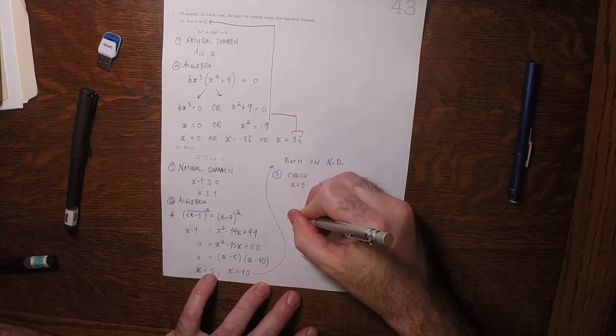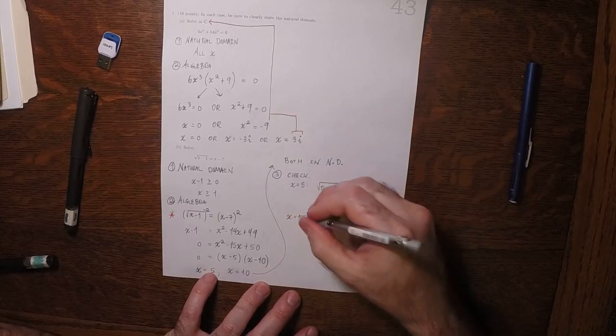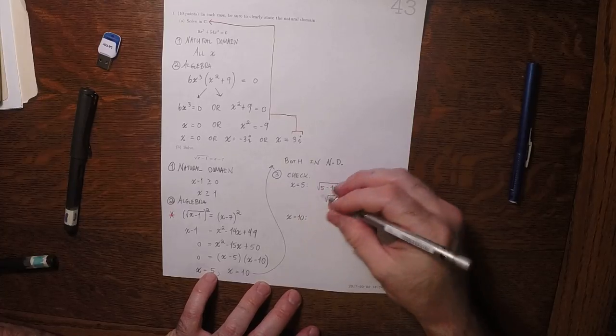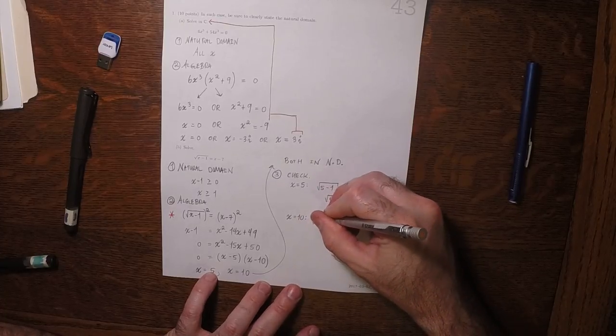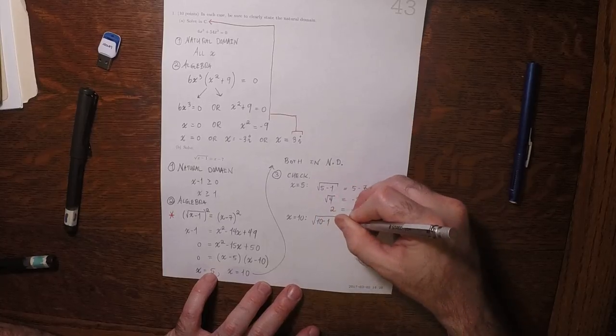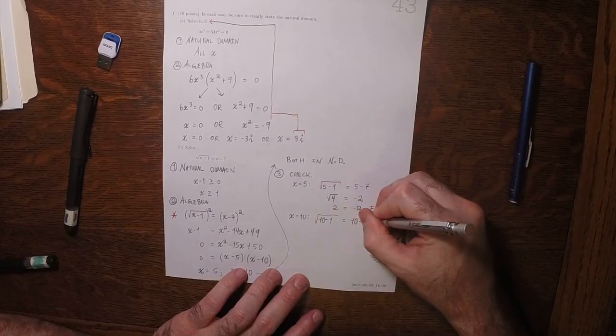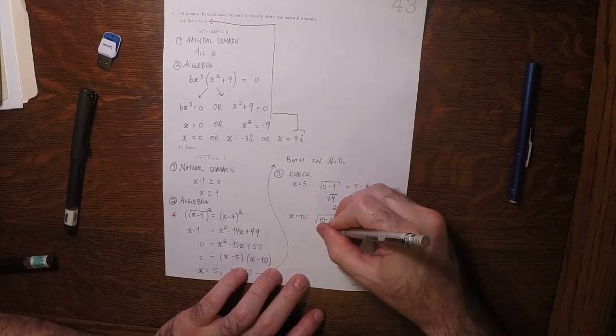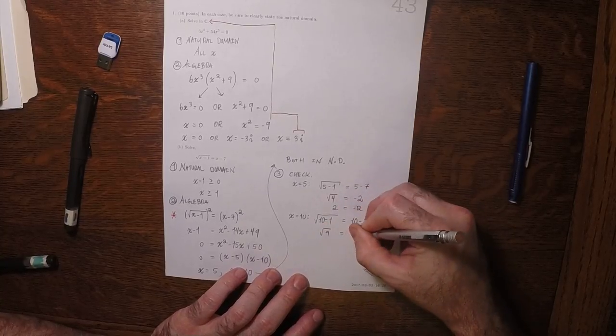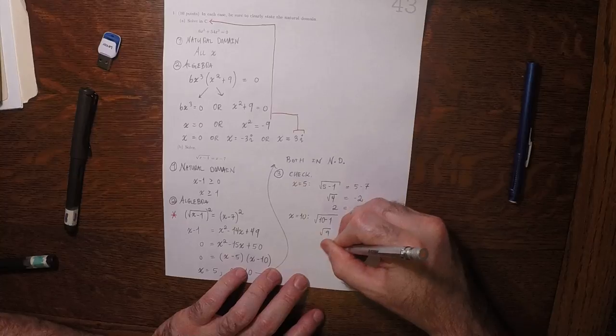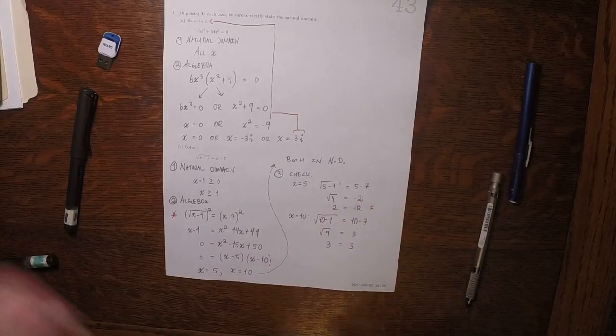We'll check the other solution, x equals 10. Square root of 10 minus 1 equals 10 minus 7. So square root of 9 is 3, so 3 equals 3.